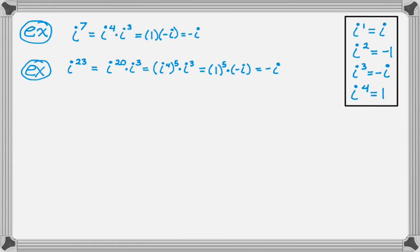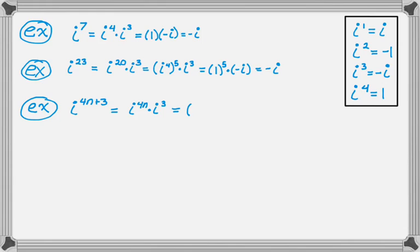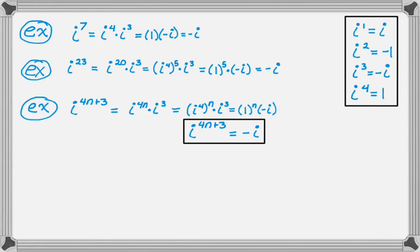What's happened here is it looks like every time the remainder when you divide the exponent by 4 is 3 — so 7 divided by 4 has a remainder of 3, and 23 divided by 4 has a remainder of 3 — every time the remainder is 3, I'm ending up with i cubed, and i cubed is negative i. So in general, if I have i to the 4n plus 3, I can break it up into i to the 4n times i cubed, which is i to the fourth to the n times i cubed. i to the fourth is 1, so I get 1 to the n times negative i. So i to the 4n plus 3 always simplifies to negative i.